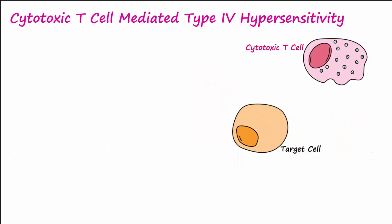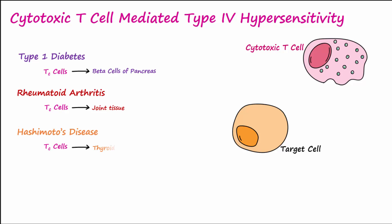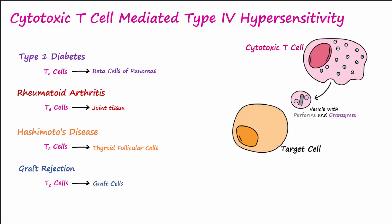Type 4 hypersensitivity reactions can also involve cytotoxic T cells, which attack target cells directly. Examples include type 1 diabetes, where cytotoxic T cells target insulin-secreting beta cells of the pancreas; rheumatoid arthritis, where cytotoxic T cells target joint tissue; Hashimoto's disease, where cytotoxic T cells attack thyroid hormone-producing follicular cells; and graft rejection, where cytotoxic T cells target foreign grafted cells.